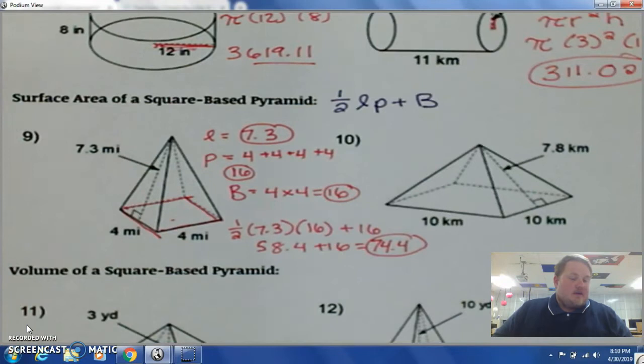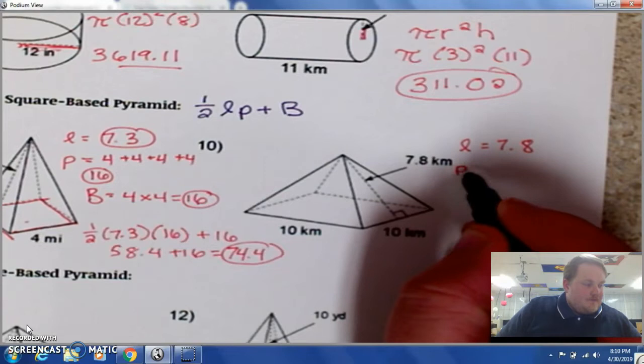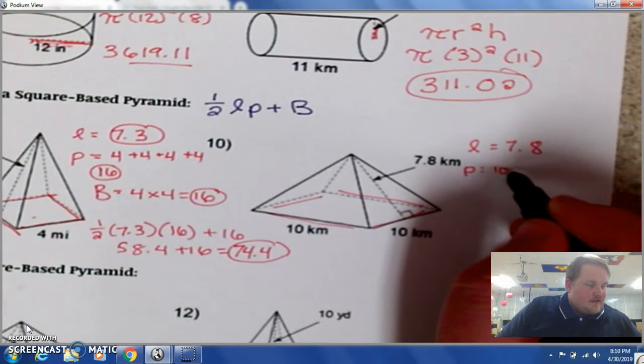Now for this particular pyramid, L is 7.8. Our P would be that 10, 10, 10, and 10. So 4 times 10, which is 40.